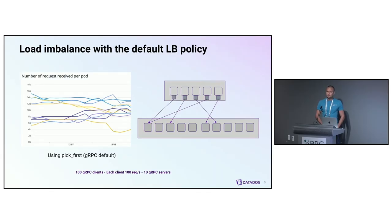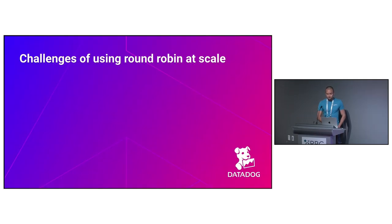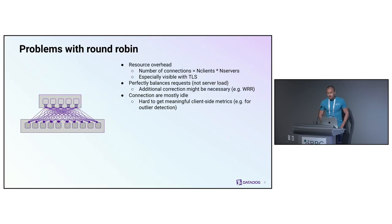As you can see from this slide, it kind of makes sense because statistically the probability that every server will be picked exactly the same number of times across all clients is very low. The way you can deal with this is by using a different load balancer called round robin, which works very differently. And as you can see, the resulting request distribution ends up being almost completely and perfectly even. Round robin is not a silver bullet though, because it has its own challenges.